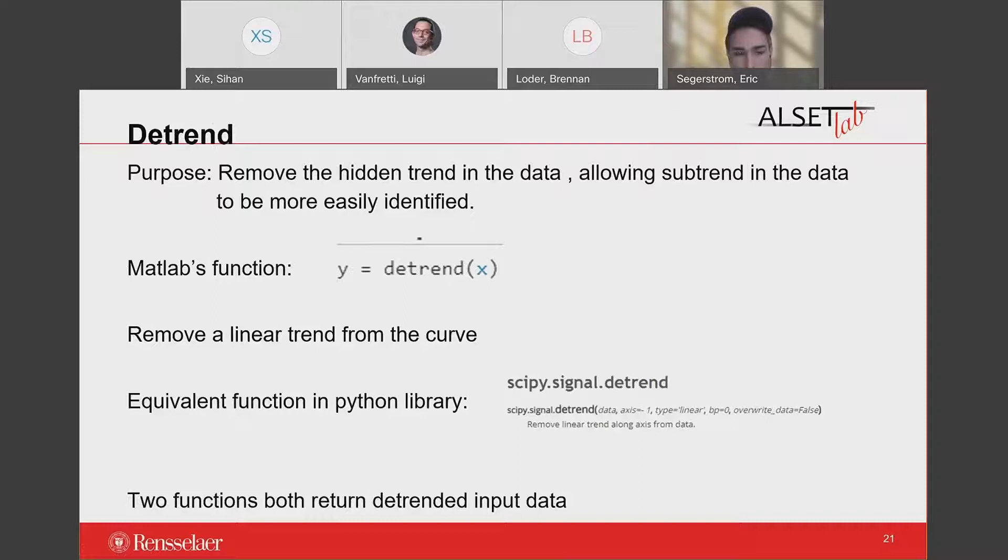After filling the missing data, the next step is to detrend the data. Detrend is to remove the hidden trend in the data. By doing so, it allows the sub-trend in the data to be more easily identified. These two functions here both remove the linear trend from the input data and return the detrended data. Therefore, we are able to pay attention to the fluctuations of data. It also implies that the mean of the detrended data becomes zero, and we can observe the overall increase and decrease.